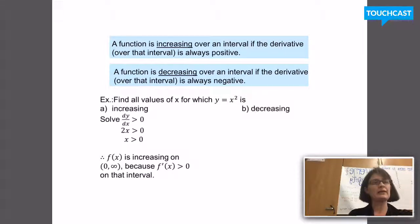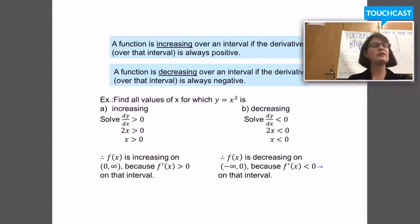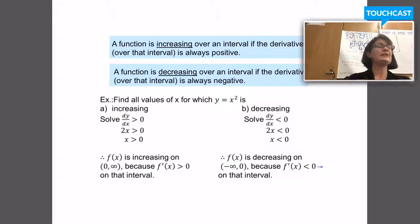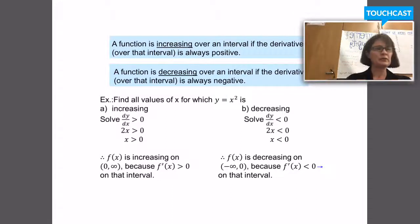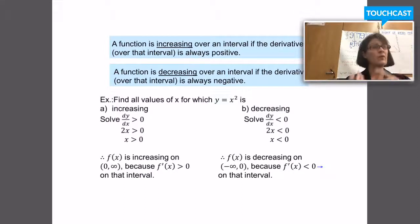Similarly, I can solve a similar inequality to find where f(x) is going to be decreasing. I want the derivative to be negative this time, so I'll solve dy/dx < 0. If 2x < 0, then x < 0, and I can write my conclusion: f(x) is decreasing on the interval (−∞, 0) because f'(x) is less than 0 — that is, f'(x) is negative on that interval.